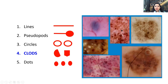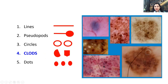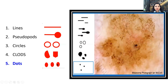The fourth basic structure is a clod — solid-staining elements of various shapes. Examples include: a single blue clod in BCC, pigmented brown clods in nevus, white milia-like clods in seborrheic keratosis, and blood lacunae in hemangioma appearing as red clods. The name 'clod' refers to shape only — not color. Clods can be blue, brown, white, or red. They can have multiple angles and curved peripheries.